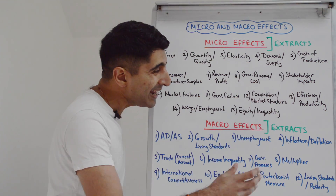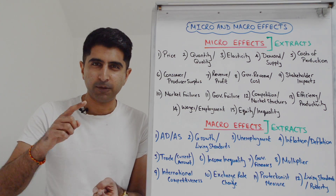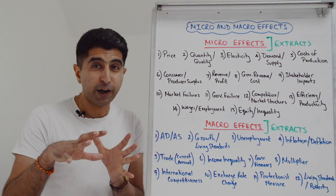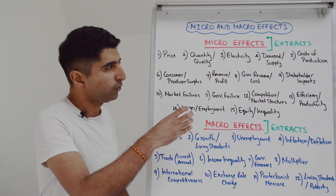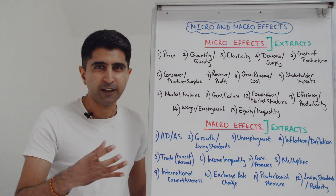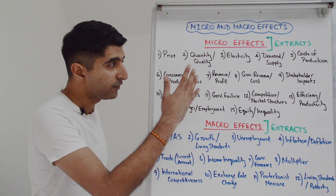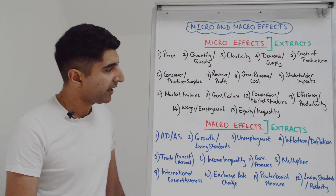Any stakeholder impacts — consumer impacts, producer impacts, government impacts — are going to be major micro effects. You studied all of this from your basic knowledge of how markets work, so these are all going to be micro effects.